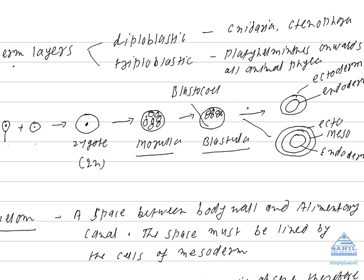During gastrulation, these cells of morula show movement. They move to their respective place to form two or three layers. During gastrulation movement, if two layers are formed, the animal is called diploblastic. These two germ layers are ectoderm and endoderm.